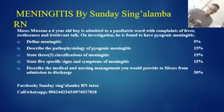Question B: Describe the pathophysiology of pyogenic meningitis. When a person gets infected with bacteria such as Streptococcus pneumoniae, these bacteria invade the blood circulation. Through the bloodstream, the infection reaches the central nervous system and infects the cerebrospinal fluid. From the CSF, the infection embeds the meninges and the ventricles, causing the meninges to become inflamed.